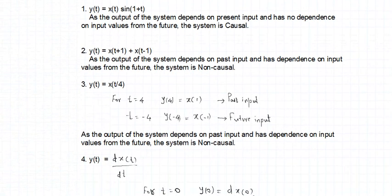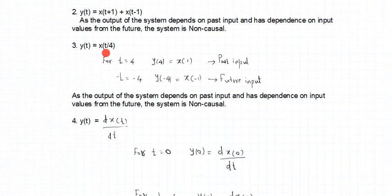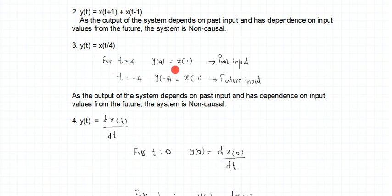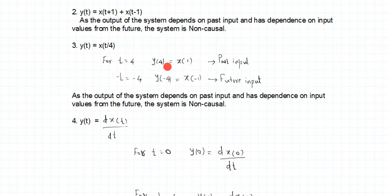Look at the next example: y(t) = x(t/4). To understand this, we analyze the system for different time instances. For t = 4: y(4) = x(1), which is a past input relative to time 4. Any value less than 4 indicates past; any value greater than 4 indicates future. But we should also check for negative values — this is not the only concluding check.